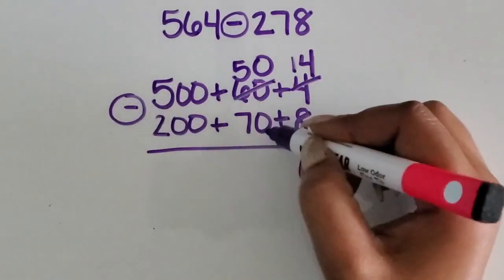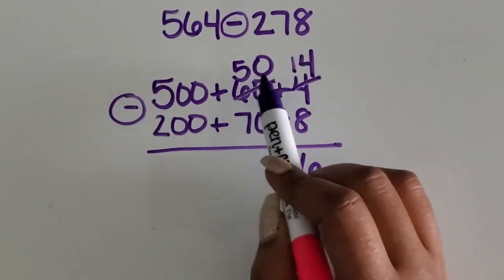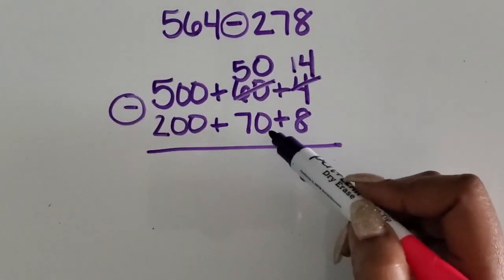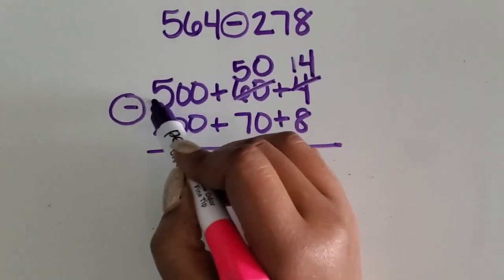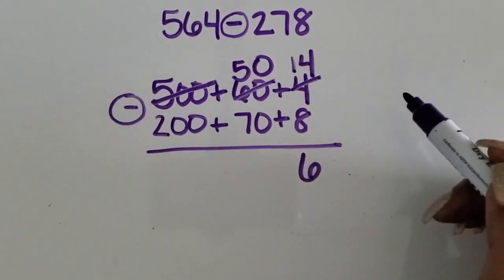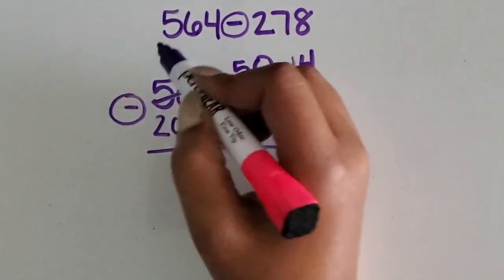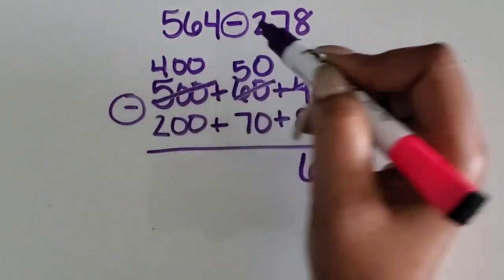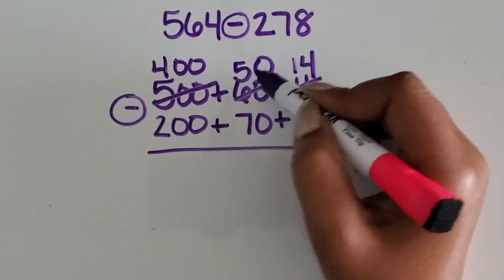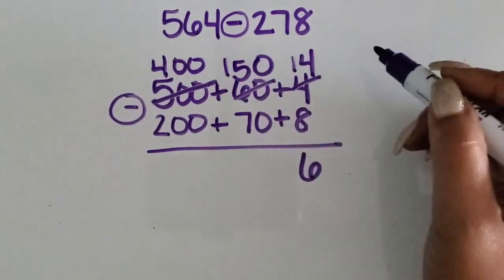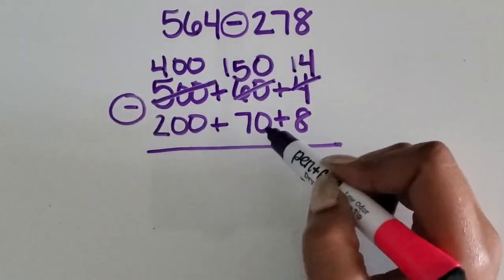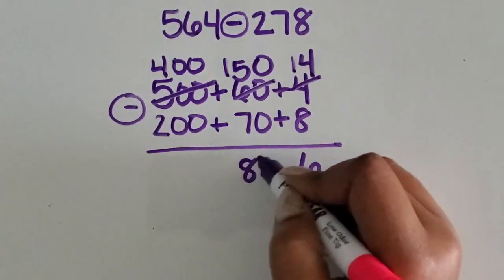50 minus 70. I don't have enough in my tens place to subtract 70, so I'm going to regroup one of the hundreds, and now I will just have 400, but when you add 100 to the 50, you get 150. 150 minus 70 is 80.